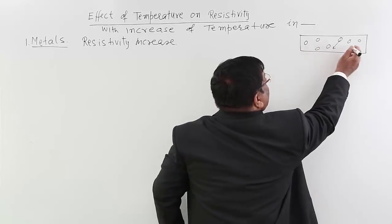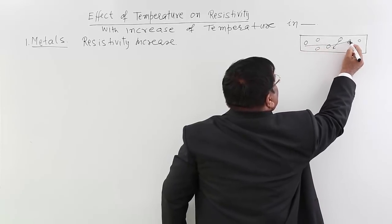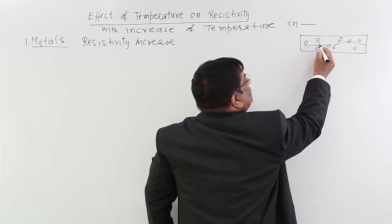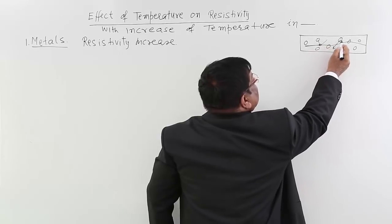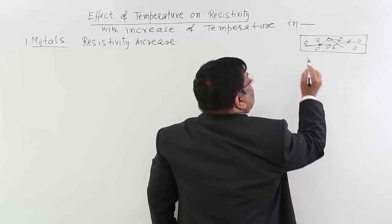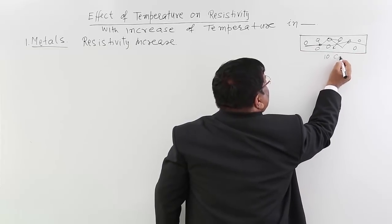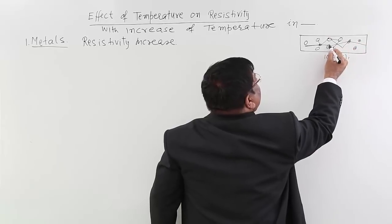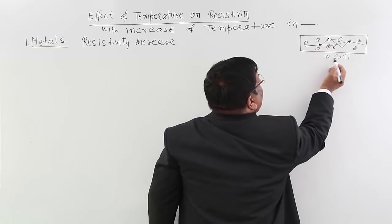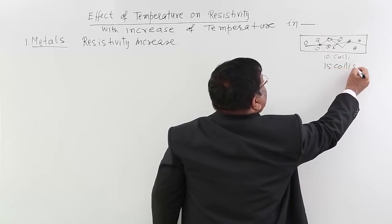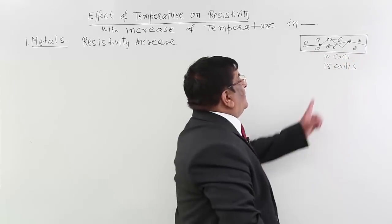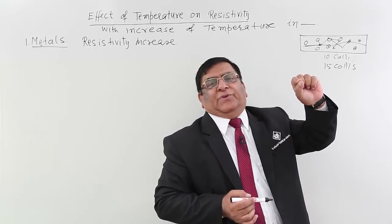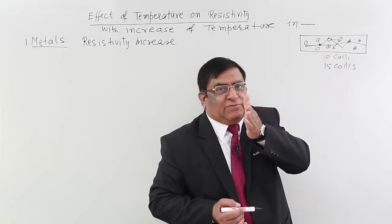If an electron is going from here, on the way it will strike this one, it will strike this two and it will reach here. But if the motion is very much increased, then there are chances that the ion will come and hit the electron. So earlier the electron was going from one place to another with 10 collisions, but when we increase the temperature, the vibrations of the positive ions become so large that instead of 10 collisions, it now has to undergo 50 collisions on the way.